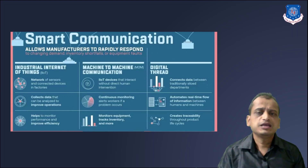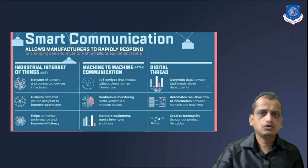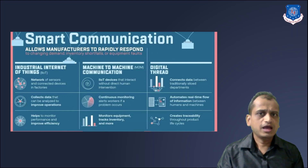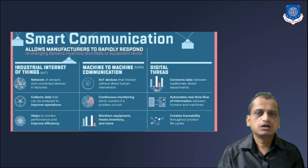The second component of smart communication is Machine-to-Machine (M2M) communication. For example, in a long assembly line with multiple machines, each machine can be continuously monitored with the help of M2M protocols and standards. That is what smart communication enables.